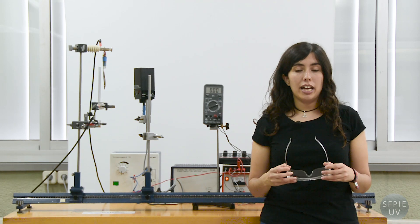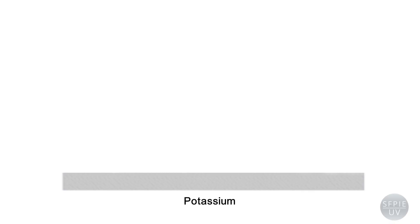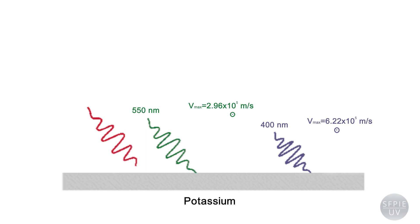However, we can use our experiment to study some qualitative features of the phenomenon. Among these features, Leonard discovered that the maximum energy of the emitted electrons depends on the frequency of the light used. The higher the frequency, or equivalently, the lower the wavelength, the greater the maximum speed. Moreover, for each metal, there is a minimum frequency of the incident light for the photoelectric effect to be produced.